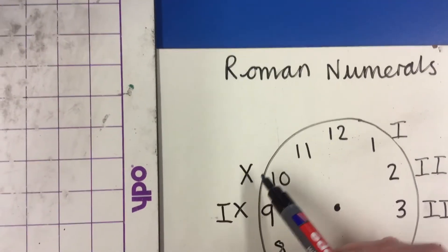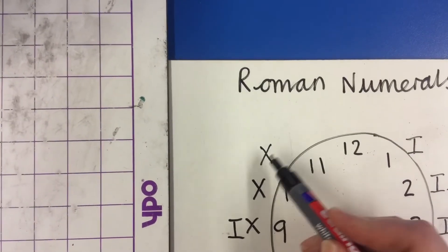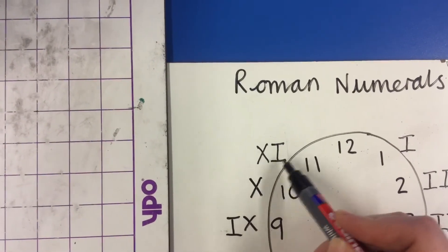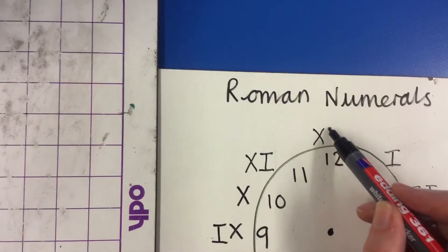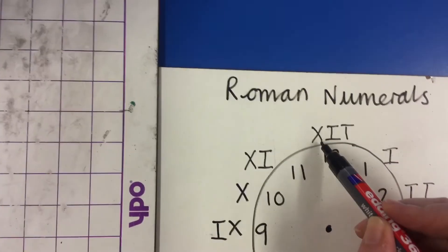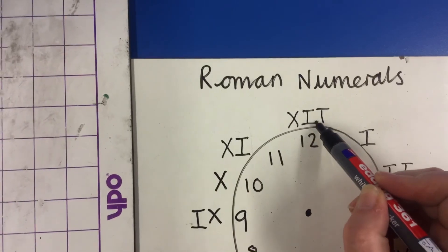10 is the symbol with X. 11 is an X with an I next to it to show 10 and 1 more. And then 12 follows: X, I, I, 10, 11, 12.